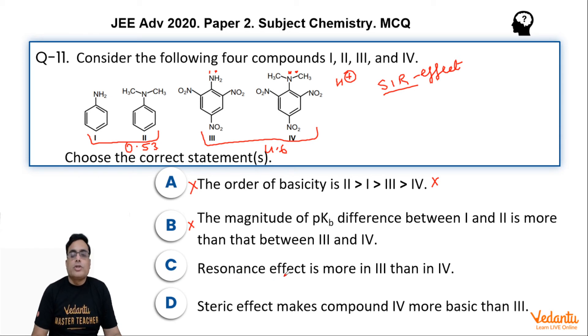Now option C says resonance effect is more in third than in fourth. This is correct. Third is less basic because of resonance effect only. And that's why in case of third, resonance effect is more. In case of fourth, the lone pair goes out of plane. The lone pair containing orbital goes out of plane. It is not in the plane with the other p-orbitals in the benzene ring, and that's why this lone pair will not be delocalized. So option C is correct because in case of third compound, lone pair of nitrogen is more delocalized.